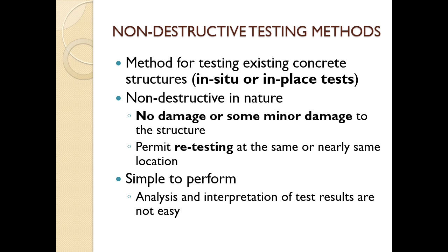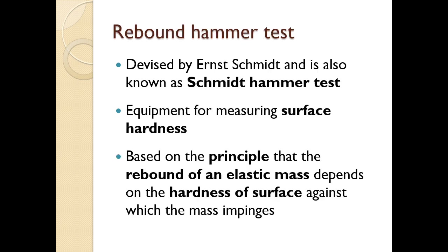When asked to write a note on tests on hardened concrete, you have to explain all these in detail. Now we have to learn about non-destructive testing, which is an important portion. These are methods for testing existing concrete structures in situ, or in place. They are non-destructive in nature, meaning no damage or only minor damage to the structure. They permit retesting at the same or nearly the same location and are simple to perform. The two main NDT tests to learn are the rebound hammer test and the ultrasonic pulse velocity test.